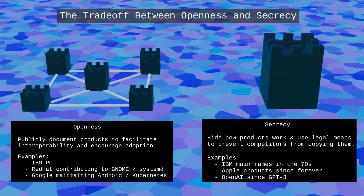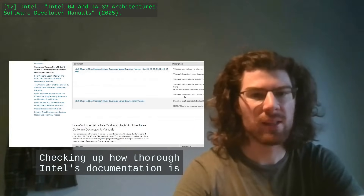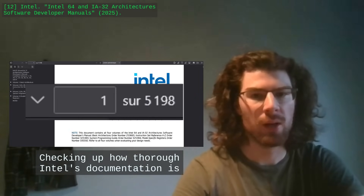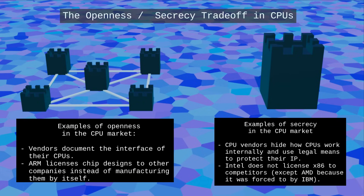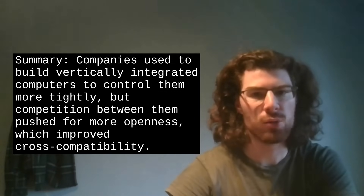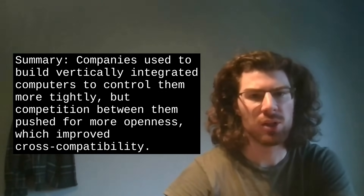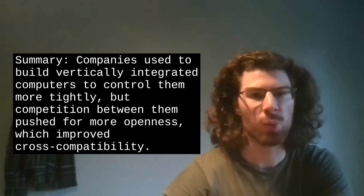If you keep your product as secret as possible, you can have higher margins, but it's more difficult to disrupt the market. We see the same thing with CPUs — when manufacturers document their chips well, it makes it easier for programmers to write and optimize code. But manufacturers do not release the inner workings of their CPUs; they hide information and use legal protection to make sure they preserve trade secrets. Competition between companies somehow pushed for more openness, which made it easier for developers to write compilers themselves instead of relying on manufacturers.